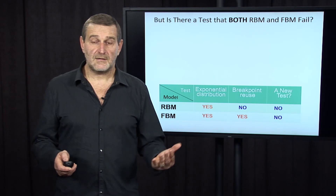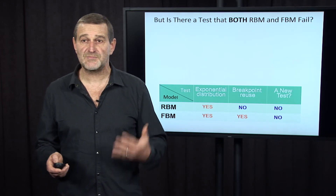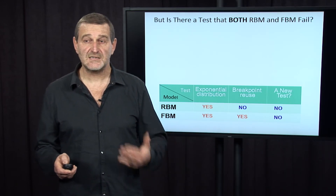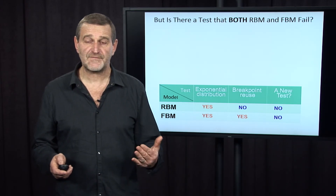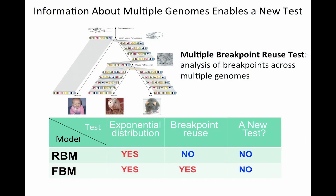But maybe the fragile breakage model uses the same logical fallacies as the random breakage model — because maybe there is a test that both models fail. It turned out very recently that indeed there is such a test. This test became possible because many genomes have been sequenced in recent years, and scientists were able to analyze breakpoints not only between two genomes — human and mouse — but between multiple genomes. They proposed the so-called multiple breakpoint reuse test, which analyzes breakpoints across multiple genomes.